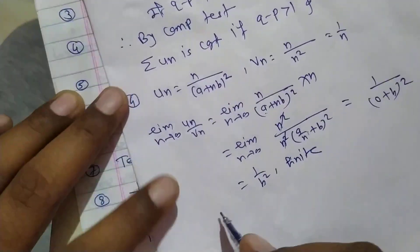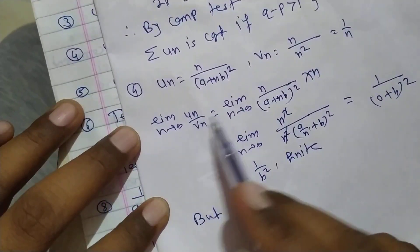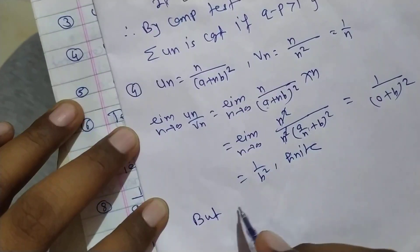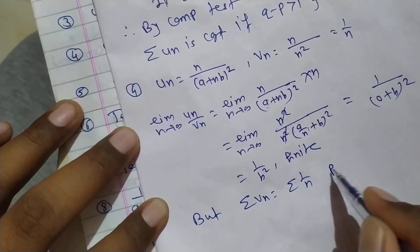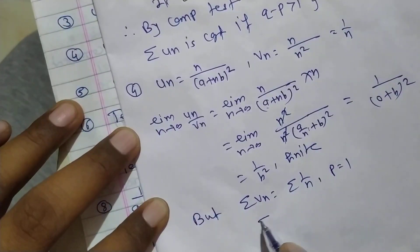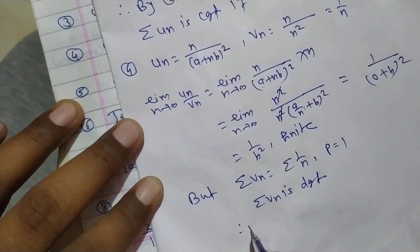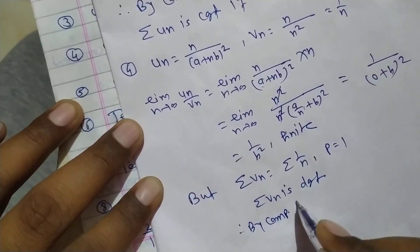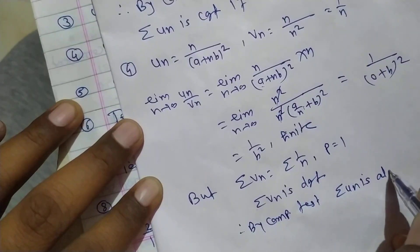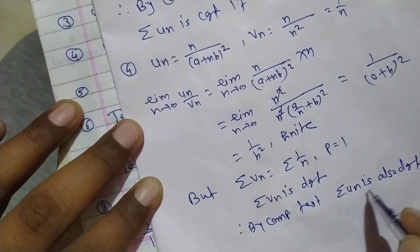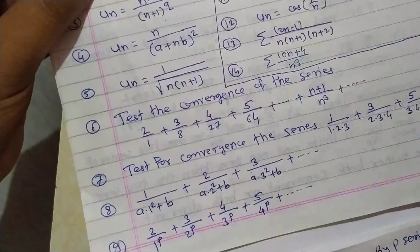Find limit as n→∞ of un/vn = limit of [n/(a+nb)²] × n = n²/(a+nb)². Take n common from (a+nb): n²/[n²(a/n + b)²]. This simplifies to 1/(a/n + b)² → 1/b² as n→∞. This is finite, so un and vn behave together. Since vn = 1/n and p=1, by the p-series test vn is divergent, so by comparison test un is also divergent.